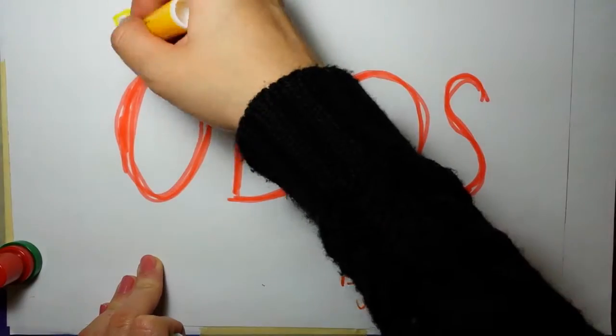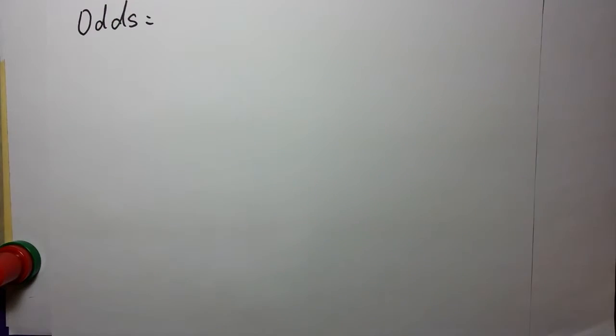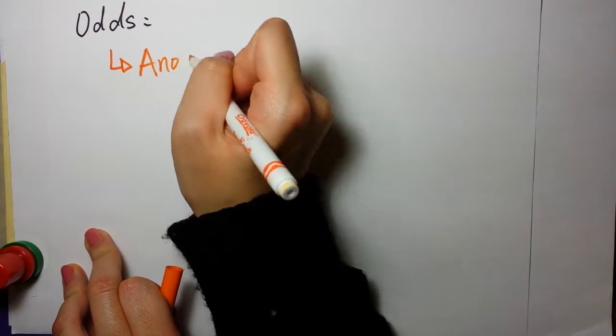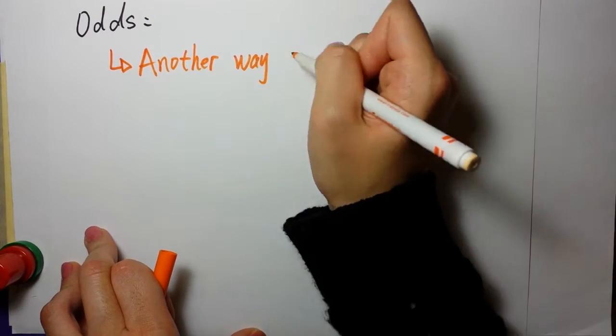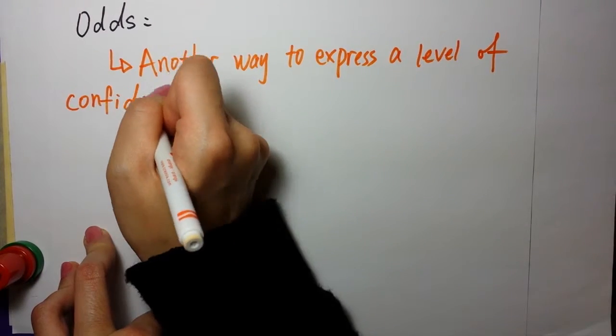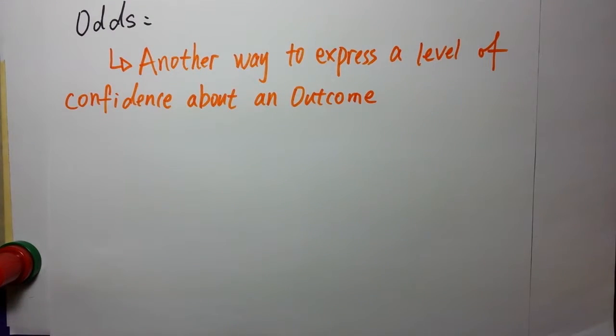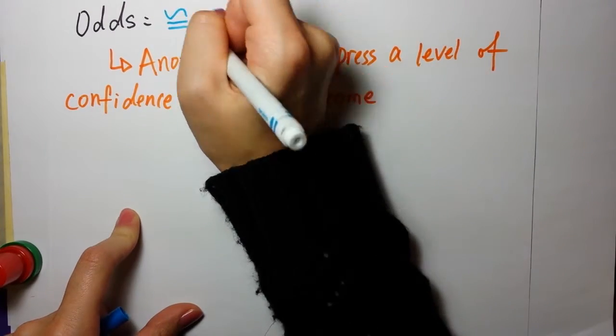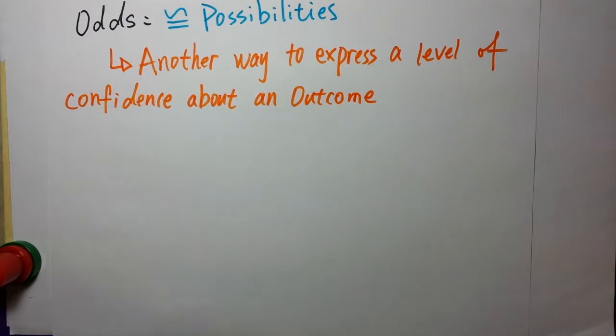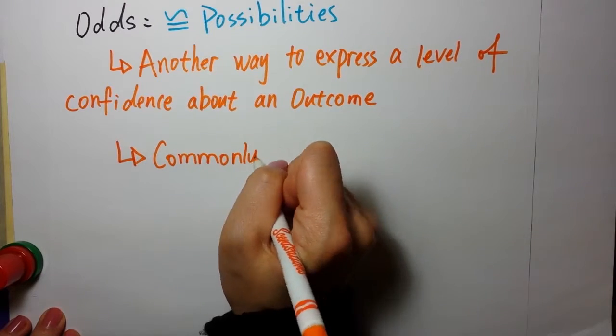Our first topic is odds. First of all, what are odds? Odds are another way to express a level of confidence about an outcome. Odds are similar to probabilities, but the only difference is odds can be larger than one while probabilities cannot. Odds are commonly used in sports and other areas.